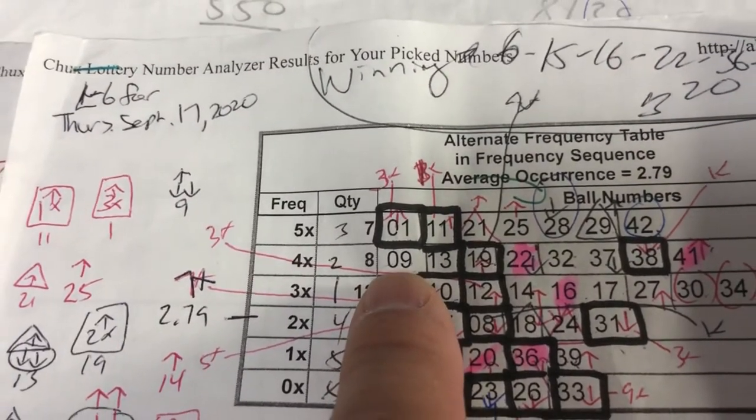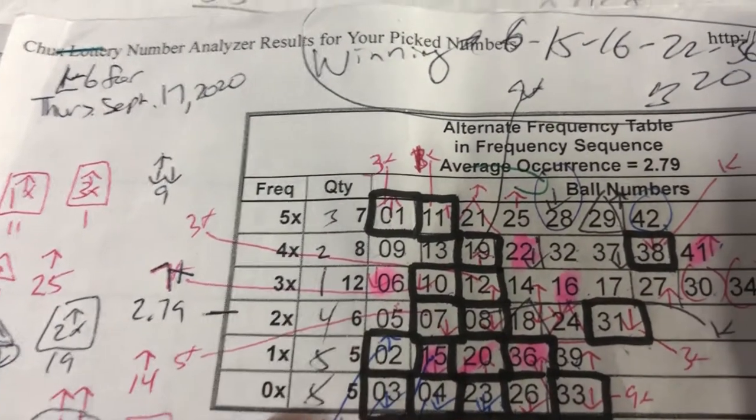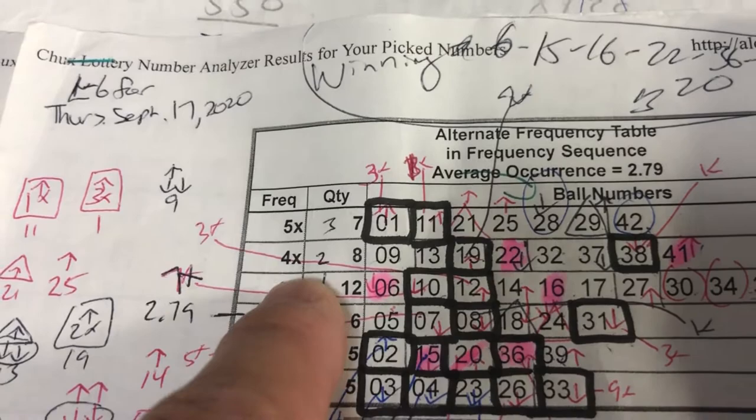It was up here on this fifth tier, one, two, three, four, five, 4x.